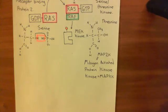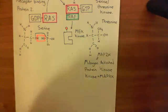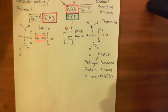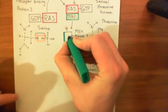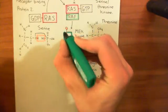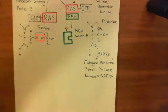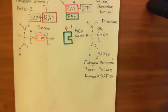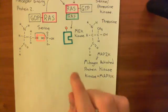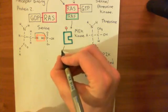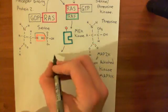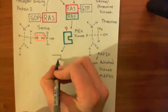All of those are names for the same protein — MEK kinase. This MEK kinase enzyme has now been activated, and it itself is a serine-threonine kinase. So when it's activated, it's going to add phosphate groups onto the serine and threonine residues of some other protein — activating the next protein in this cascade, which is also a serine-threonine kinase.